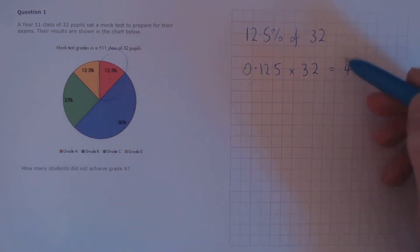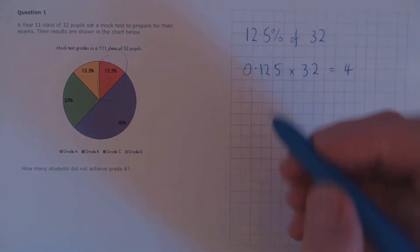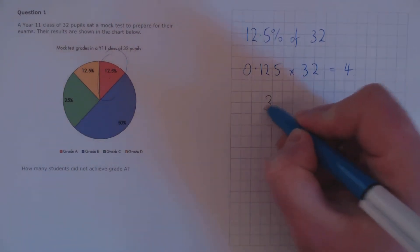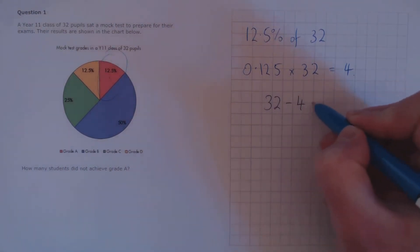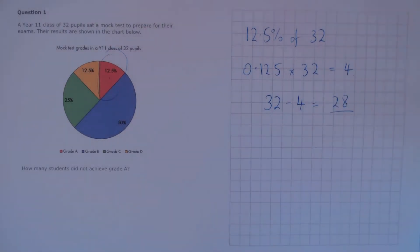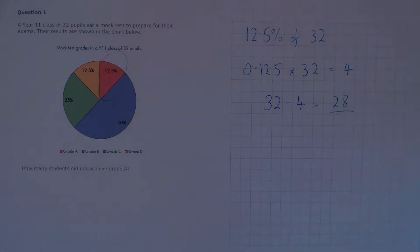This is the number of pupils that got a Grade A, so we want the pupils that didn't — take 4 away from the total, which is 28 students who did not achieve Grade A.